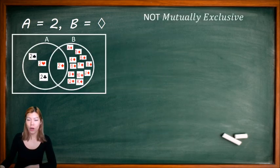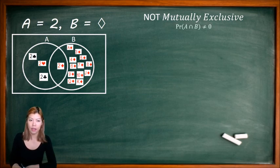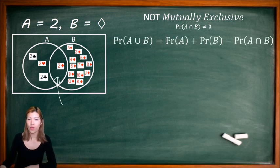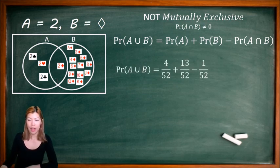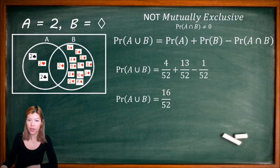We call this 'not mutually exclusive,' meaning there is an intersect and the intersect is not zero. In this case, the intersect is equal to 1. So when we find A union B, we have to add A and B and subtract that intersect. So 4 plus 13 minus 1 is 16, not 17. There are 16 of those outcomes out of 52.